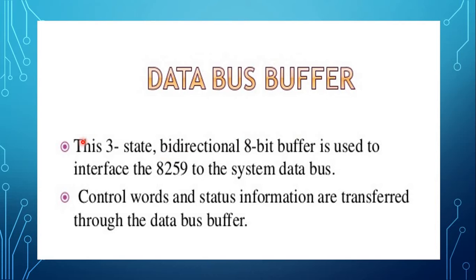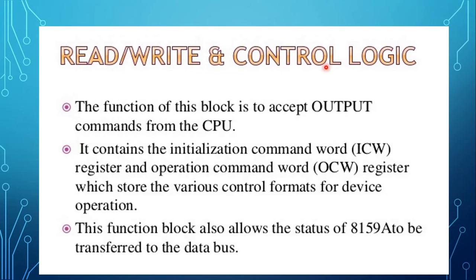Read/write is an active low control input. When the read signal is low, it enables the 8259 to send various data signals on the data bus. When the write signal is low, it enables the 8259 to accept command words from the CPU. A0 is an address input line used to select the appropriate control register. When chip select is low, it enables communication between the CPU and 8259.